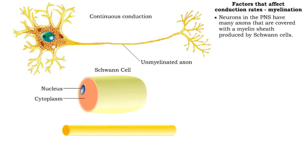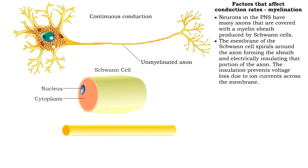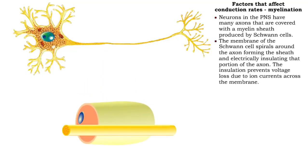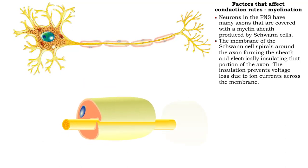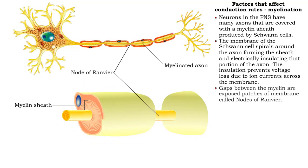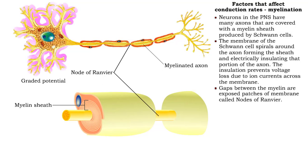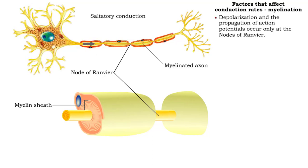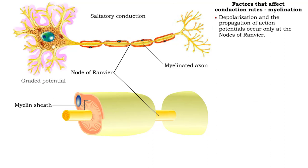In the peripheral nervous system, Schwann cells form myelin sheaths by wrapping their cell membranes in multiple layers around an axon. The axon is now electrically insulated except for the gaps, called nodes of Ranvier, where the membrane is exposed. Because myelin electrically insulates an axon and prevents ion currents across the membrane,